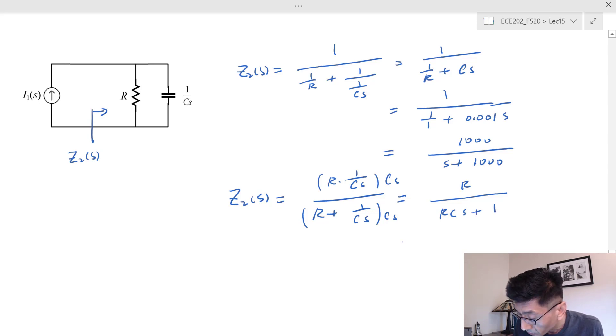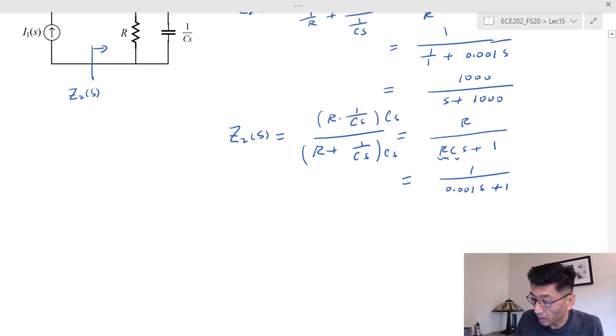I got 1 over... putting the numbers in, I got 1 over 0.001s because 1 times 0.001 plus 1, and that's equal to one thousand over s plus one thousand.